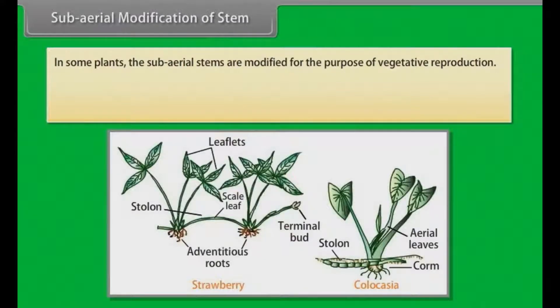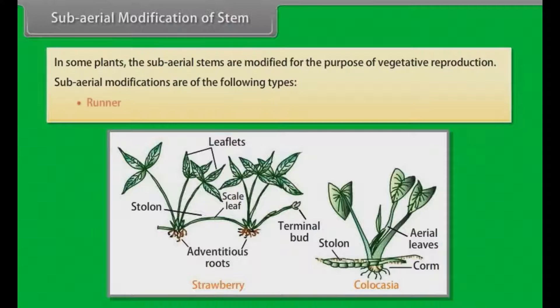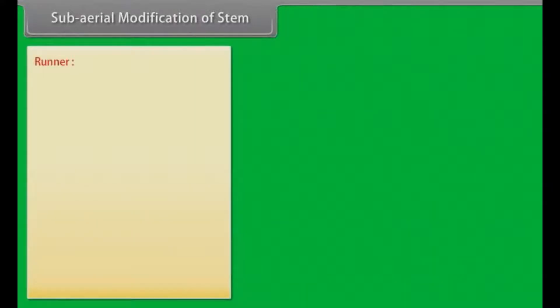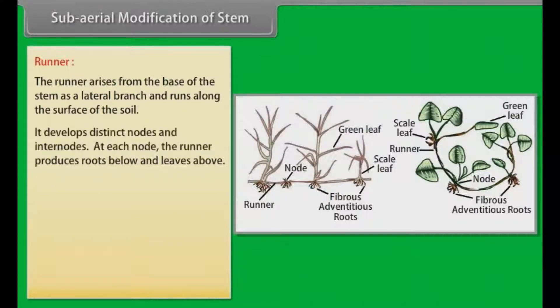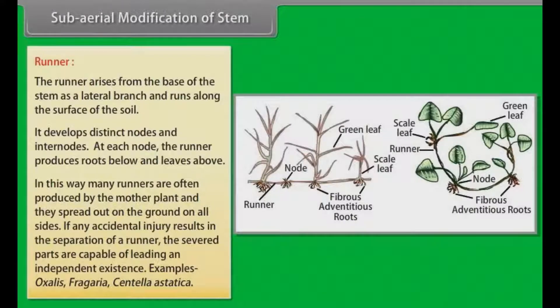In some plants, the sub-aerial stems are modified for the purpose of vegetative reproduction. Sub-aerial modifications are of the following types: runner, stolon, sucker, and offset. The runner rises from the base of the stem as a lateral branch and runs along the surface of the soil. It develops distinct nodes and internodes. At each node, the runner produces roots below and leaves above. Many runners are often produced by the mother plant and they spread out on the ground on all sides. If any accidental injury results in the separation of a runner, the severed parts are capable of leading an independent existence. Examples: Oxalis, Fragaria, Centella asiatica.